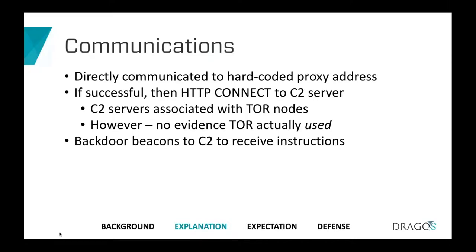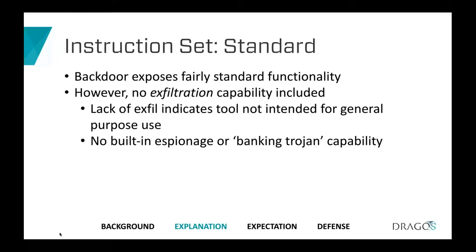The backdoor calls out to the C2 server to receive instructions — it does not function as an interactive remote access tool. Instead, it reaches out through the proxy, hits the C2 node, retrieves instructions, executes them, and reports back. There is a time lag between beacons for when this implant can take action.